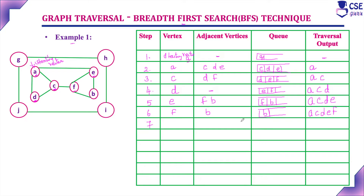The only vertex remaining in the queue is B. We visit B and all its adjacent vertices are already visited. There is no adjacent unvisited vertex and the queue is now empty. The traversal output for the first graph is A, C, D, E, F, B.